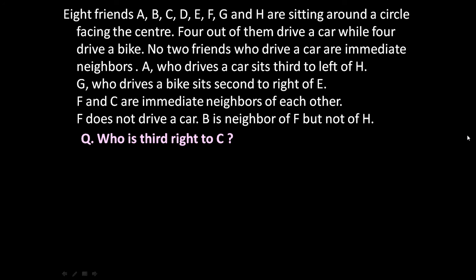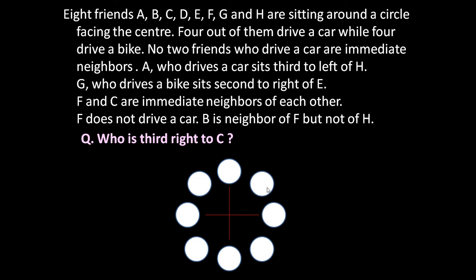First let us analyze the given information in a proper way. 8 friends are facing the circle, so let us draw 8 positions. These are the 8 friends facing the circle. 4 of them drive a car while 4 drive a bike, and no two friends who drive a car are immediate neighbors.